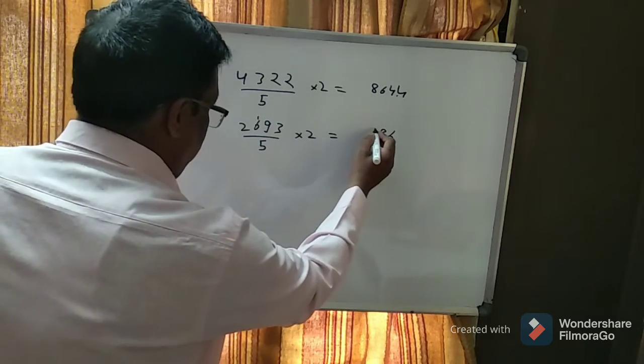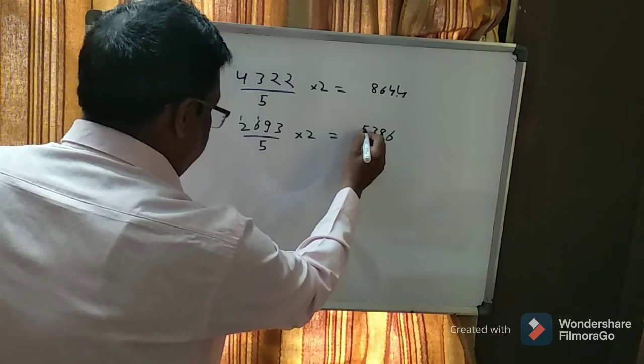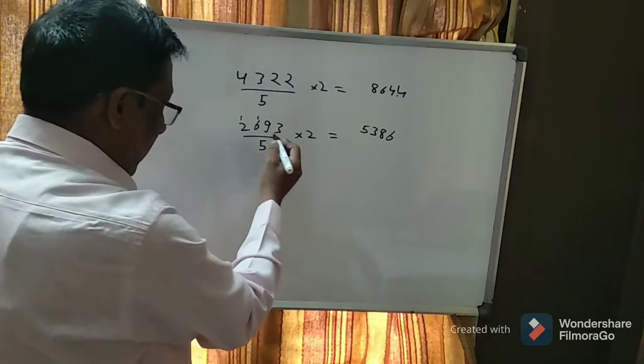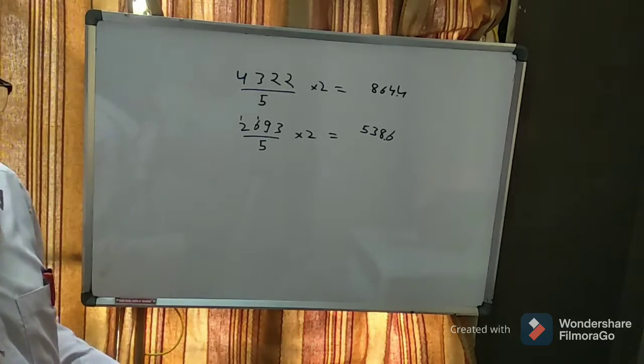6 times 2 is 12, 12 plus 1 is 13, carry 1. 2 times 2 is 4 plus 5. Again, divisor is single digit. Leave one digit, put a point. This is your answer. Okay, fine.